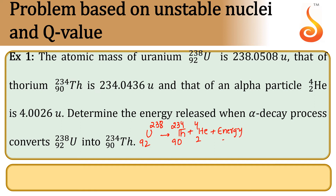The amount of energy released is determined by the mass defect: the sum of masses of thorium and helium will be less than the mass of uranium. Whatever mass defect we get, that mass defect will be converted in the form of energy.